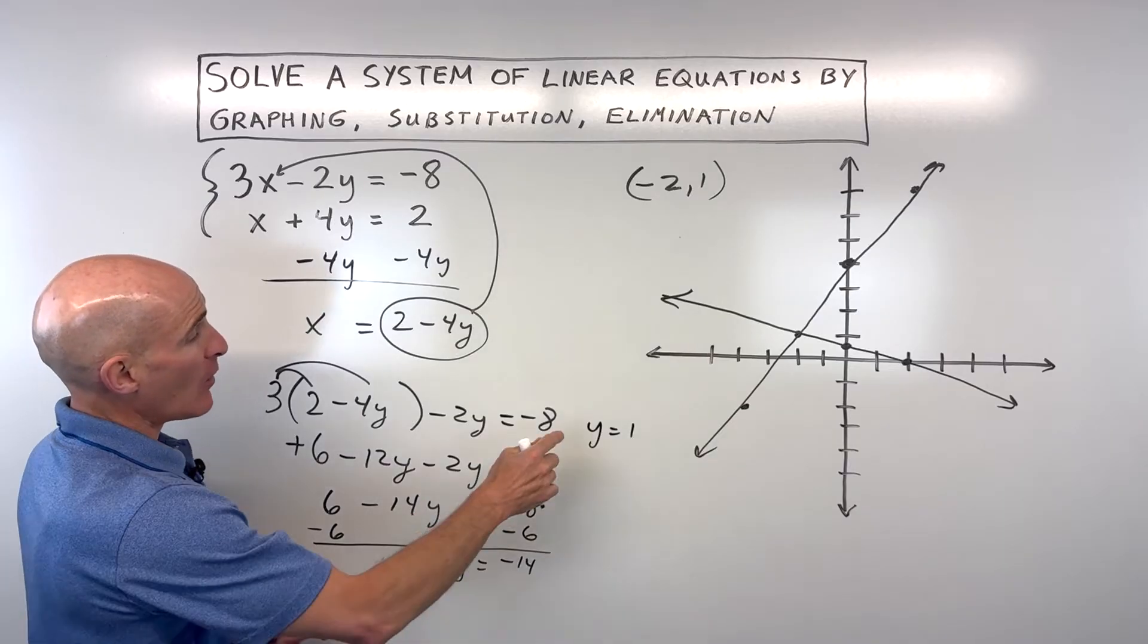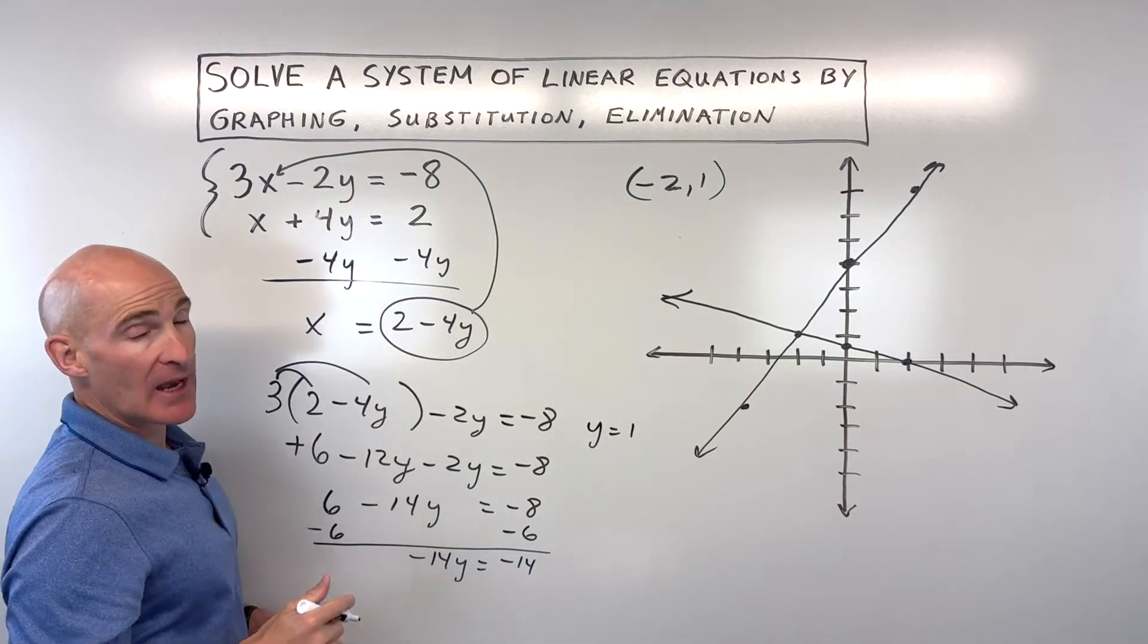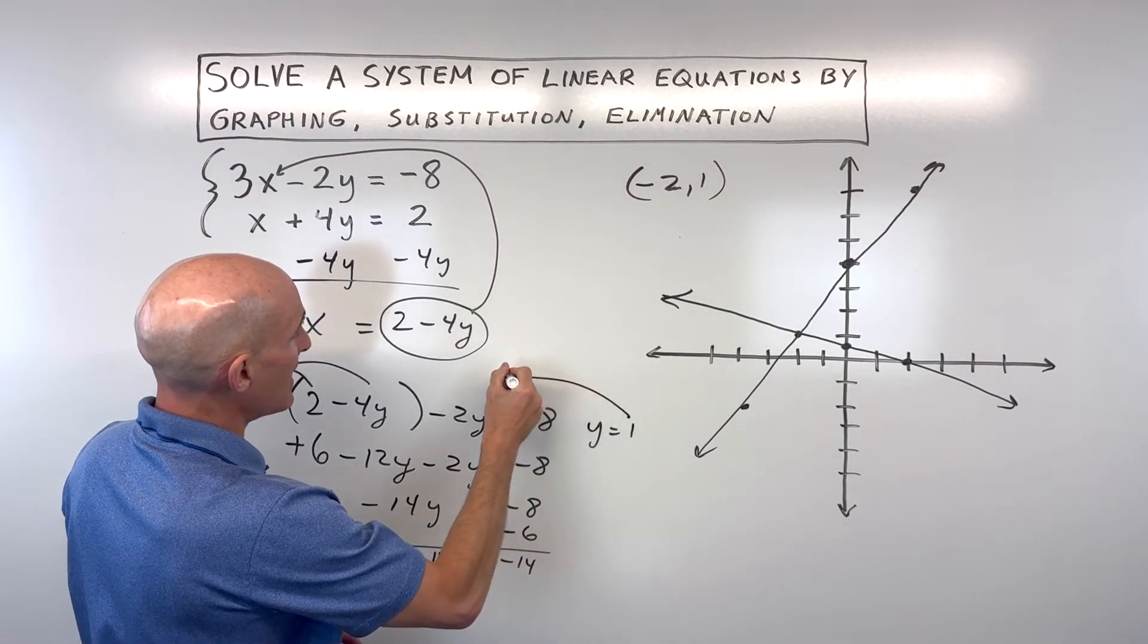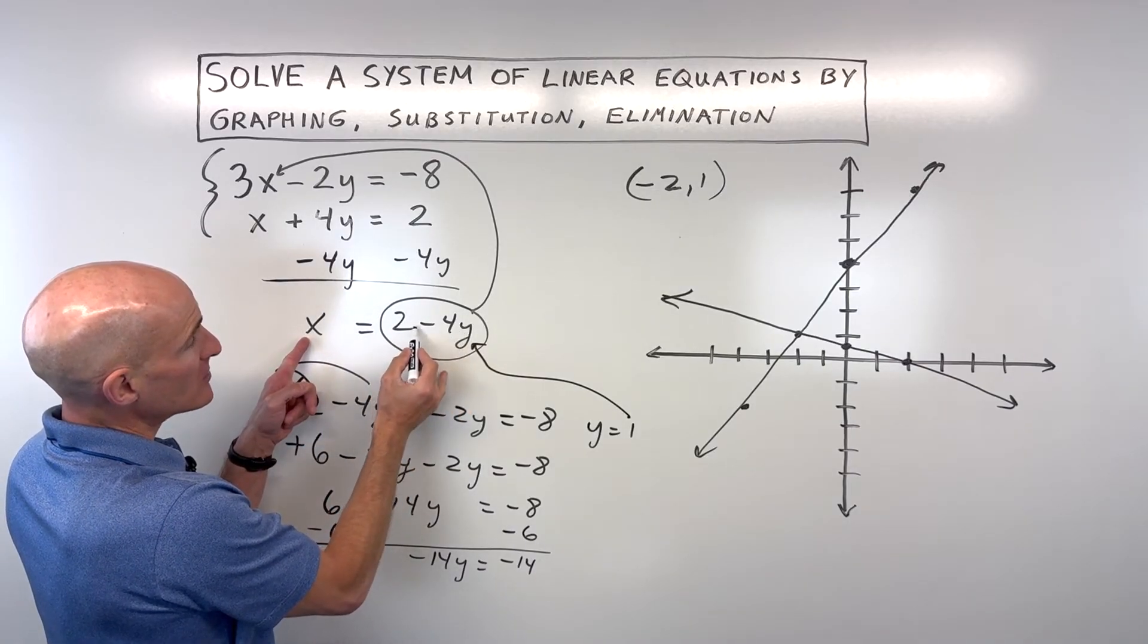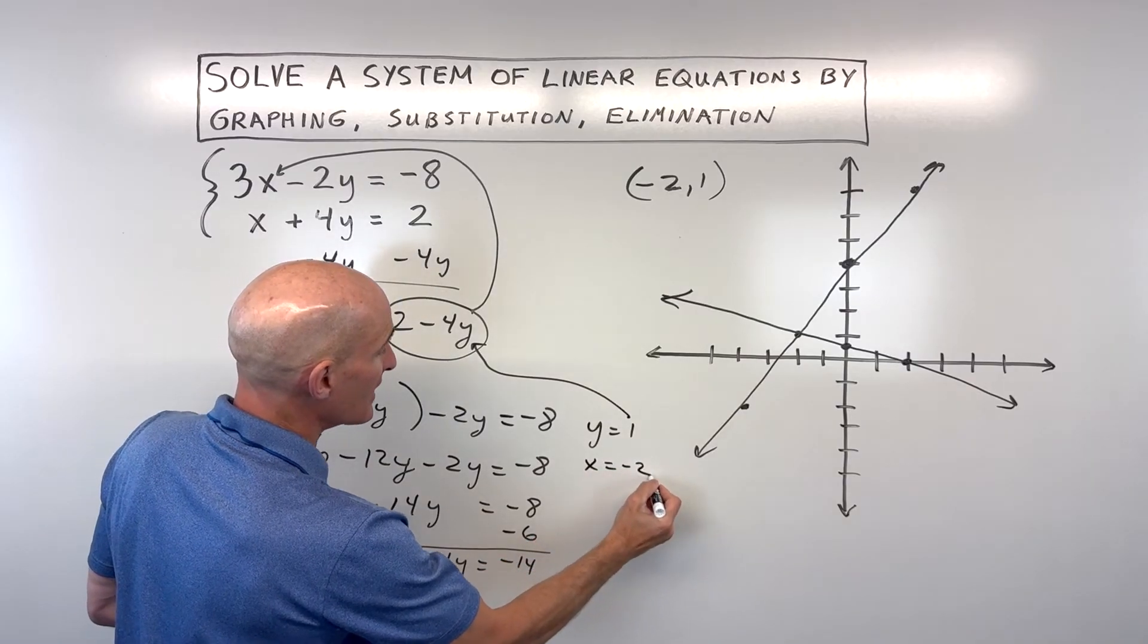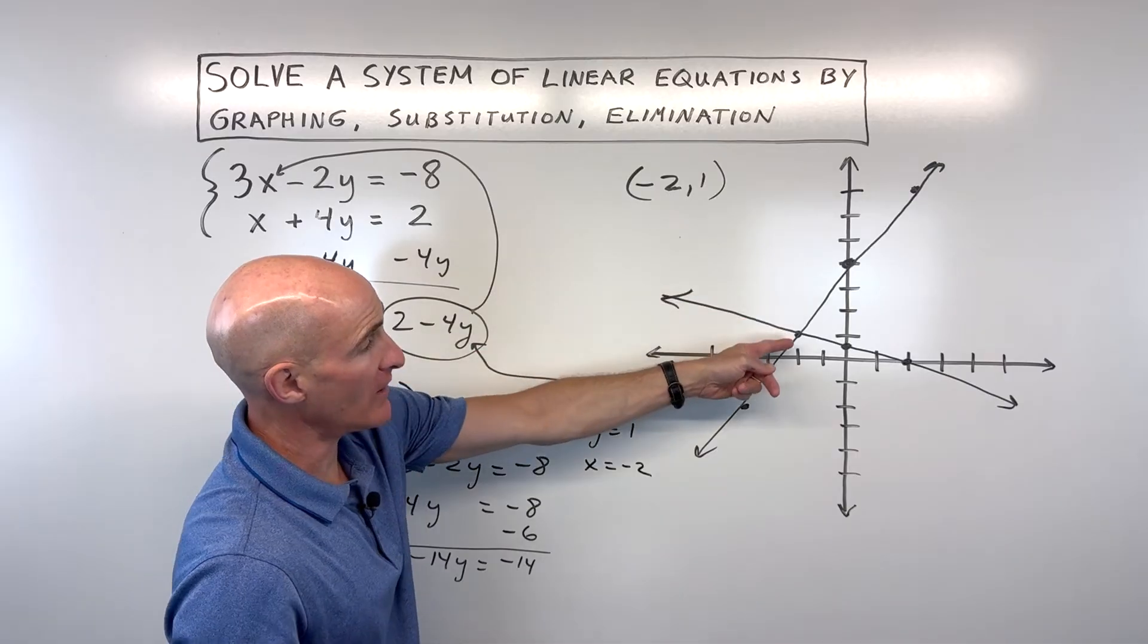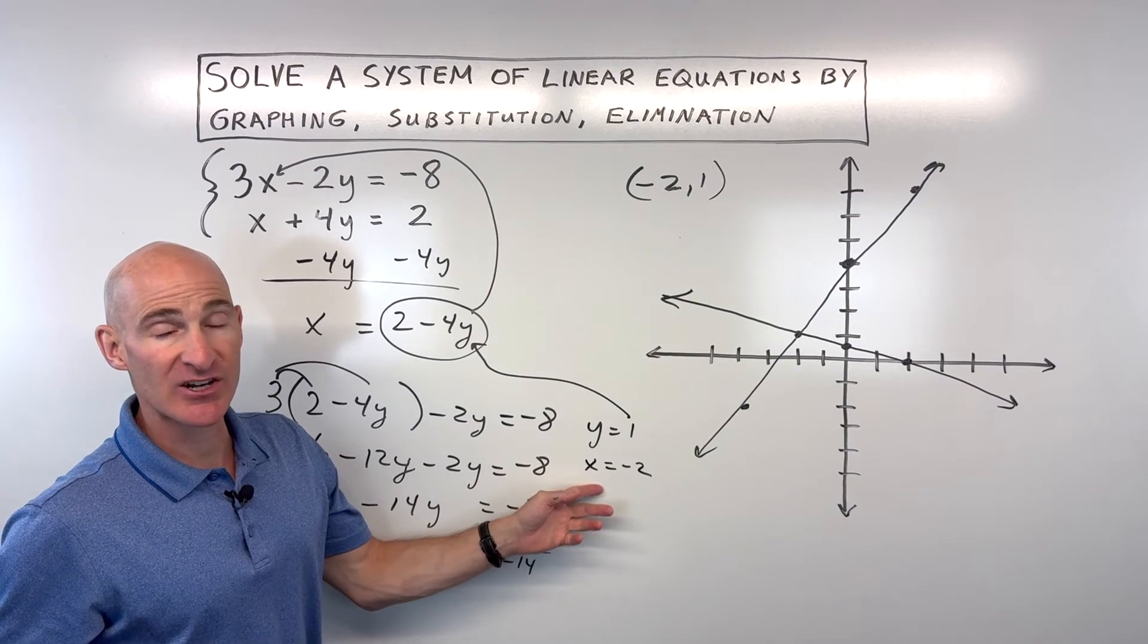So, if we take that 1 now, we can plug it back in for y here or here or here. Any one of the equations, you'll get the same answer. Let's just put it in here since x is already by itself. So, 4 times 1 is 4. 2 minus 4 is negative 2. So, you can see that x equals negative 2. And we're getting the same answer, negative 2, comma 1. That, again, just represents where these two lines are intersecting, that common point of intersection.